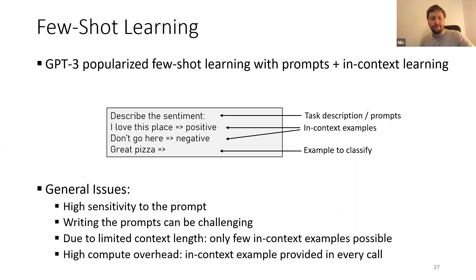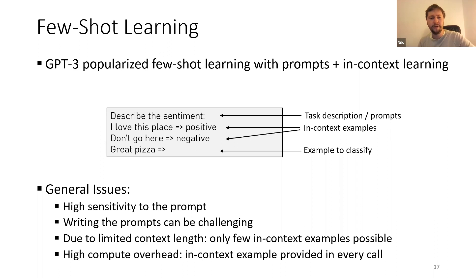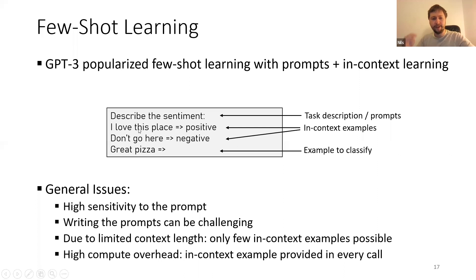Further challenges include limited context length — the original GPT-3 supports up to around 2,000 word pieces, so with long examples like movie reviews you might only fit about 10 training examples. But what happens when you have 20 or 100 training examples? There's no way to use them all in in-context learning. There's also quite high compute overhead, since encoding time complexity is quadratic with input length, so providing all those examples at every call adds significant compute cost.